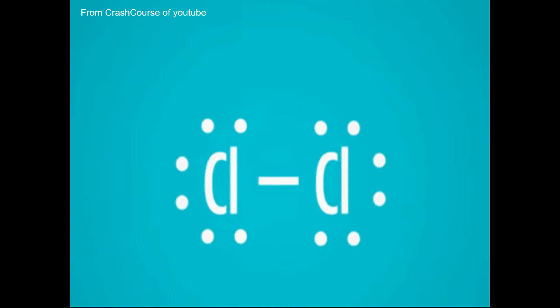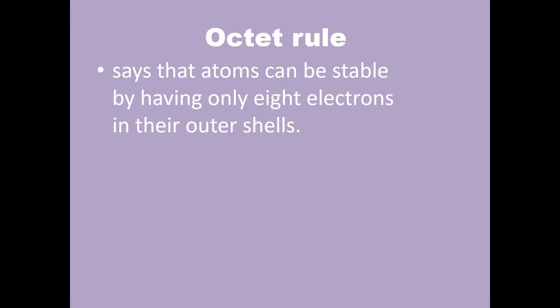But why stop at 8? The octet rule states that atoms can be stable by having only 8 electrons in their outermost shell. The reason we bond atoms, it's for stability. And stability has a number. Thy number is 8.